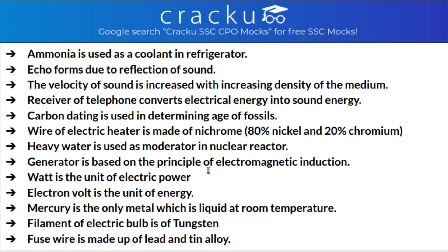A generator is based on the principle of electromagnetic induction. Electron volt is the unit of energy. Mercury is the only metal which is liquid at room temperature. The filament of an electric bulb is made up of tungsten. Fuse wire is an alloy made up of lead and tin.